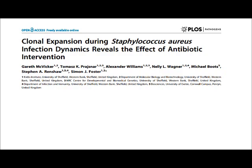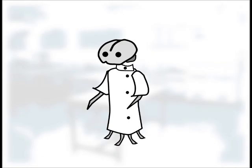The paper we're looking at is titled, Clonal Expansion During Staphylococcus Aureus Infection Dynamics Reveals the Effect of Antibiotic Intervention. So, let's get into it. What is this paper about? This paper is about how a population of bacteria with all sorts of different genotypes can change and adapt in response to the immune system and to the application of antibiotics.